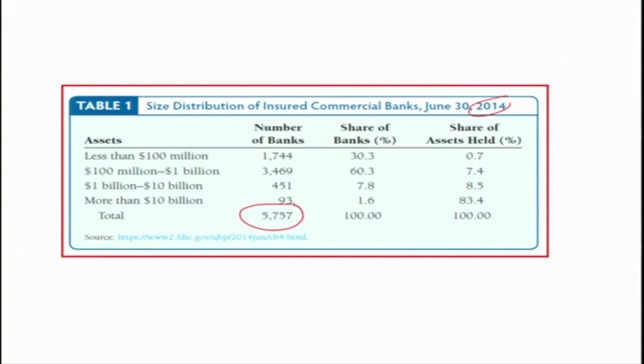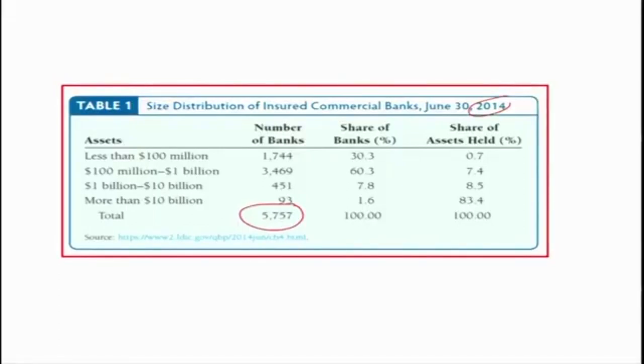When we discuss the implications of branch banking versus unit banking, in one of the forthcoming sessions we will see the nature of competition. If there are a large number of banks in a market, that means a large number of participants, which is very competitive. We will see what is the likely implication of the large number of banks in the financial market — whether it is promoting efficiency and contributing to the health of the financial system.